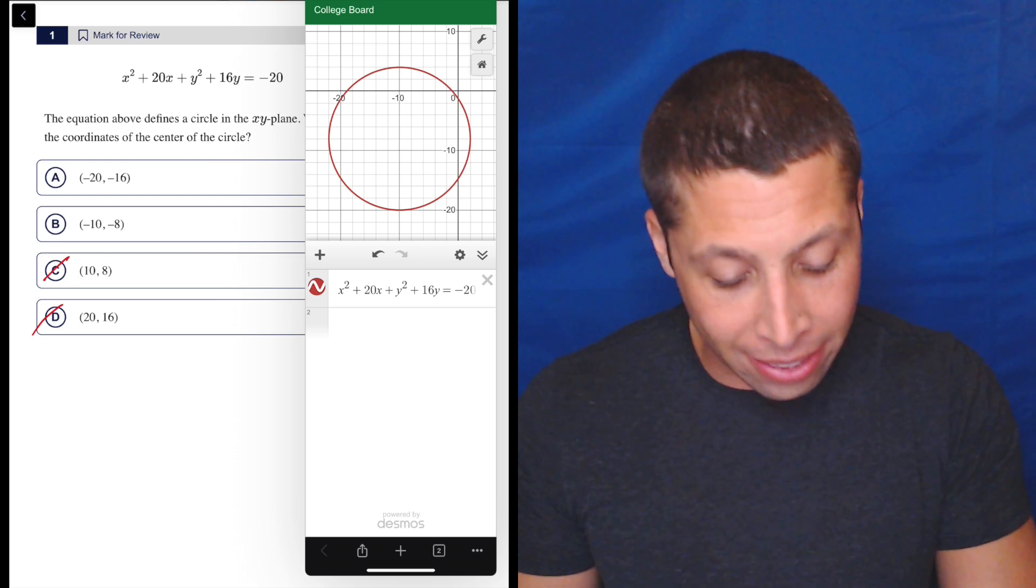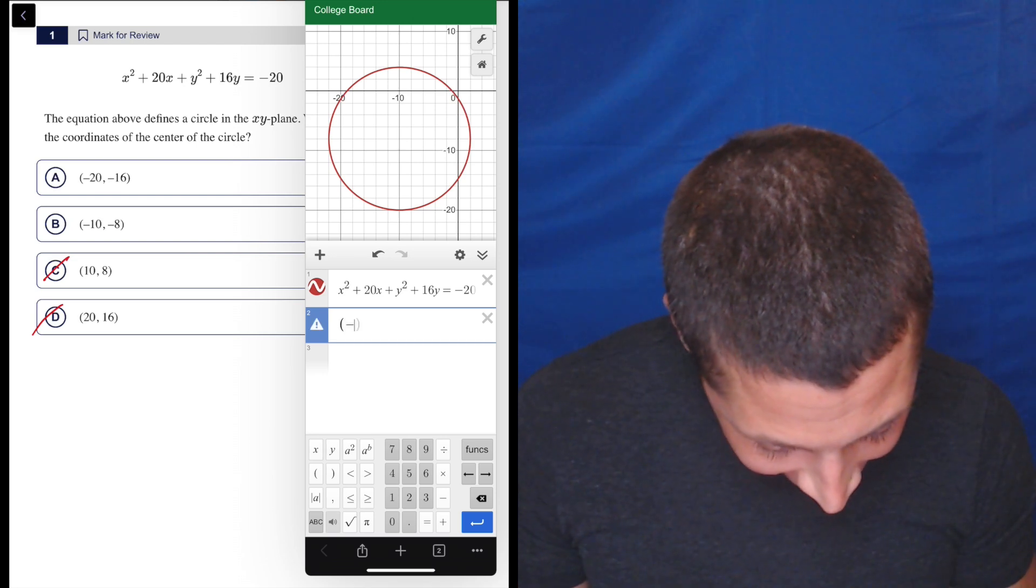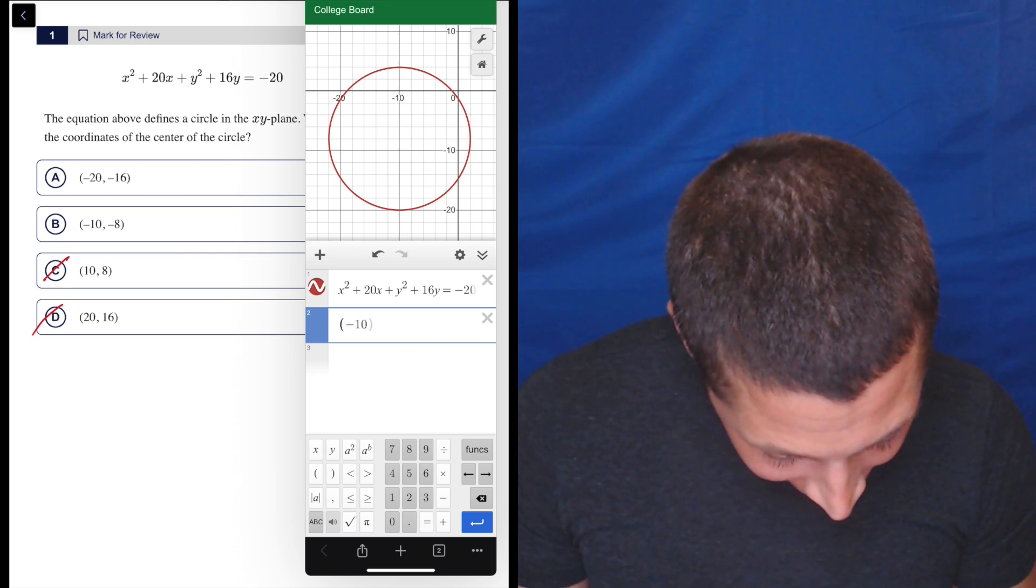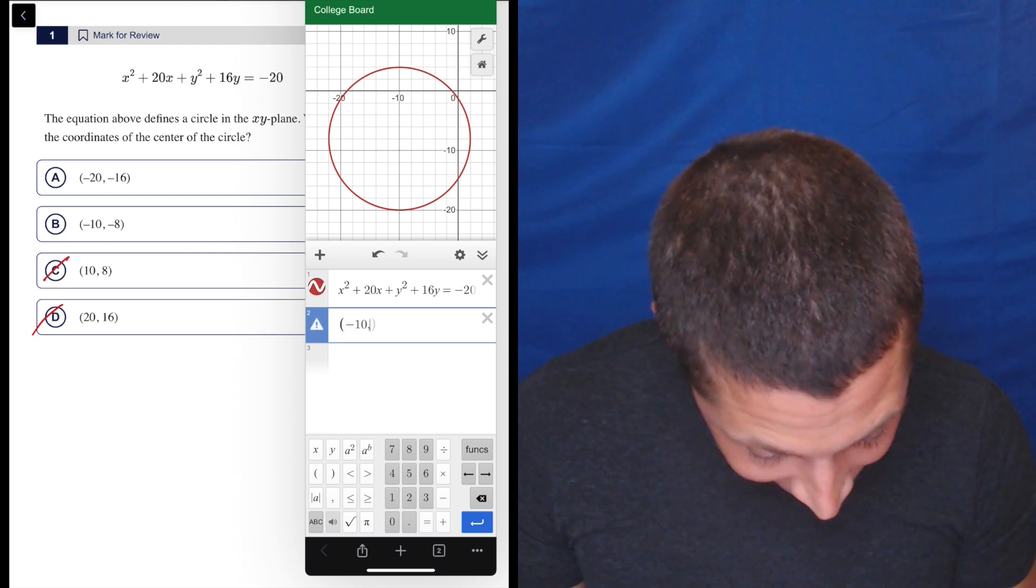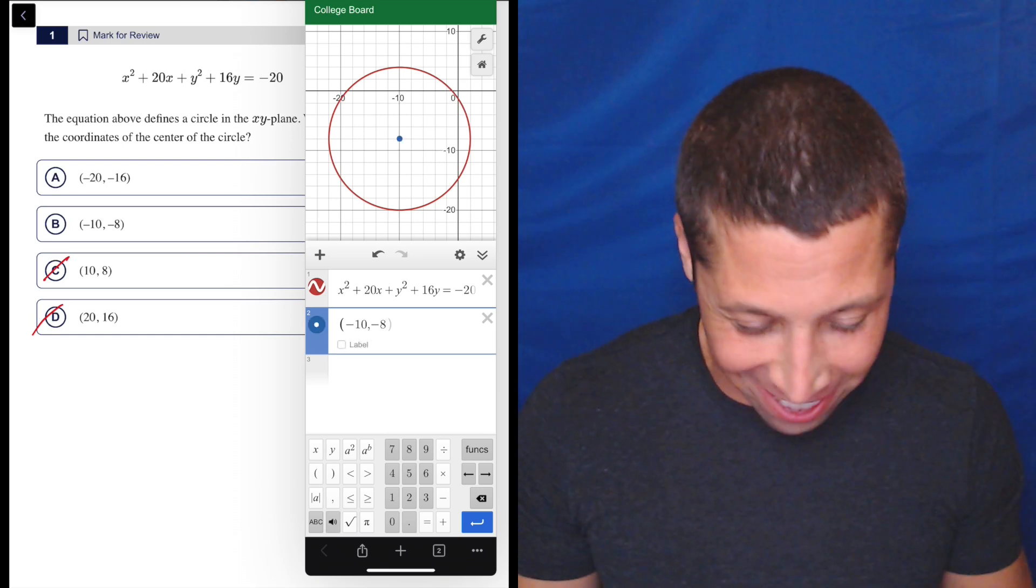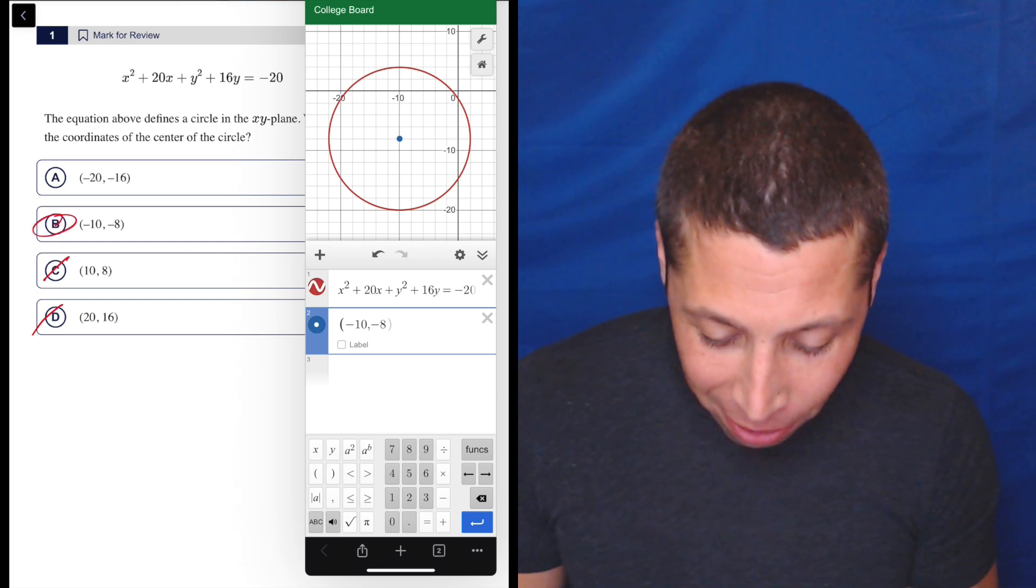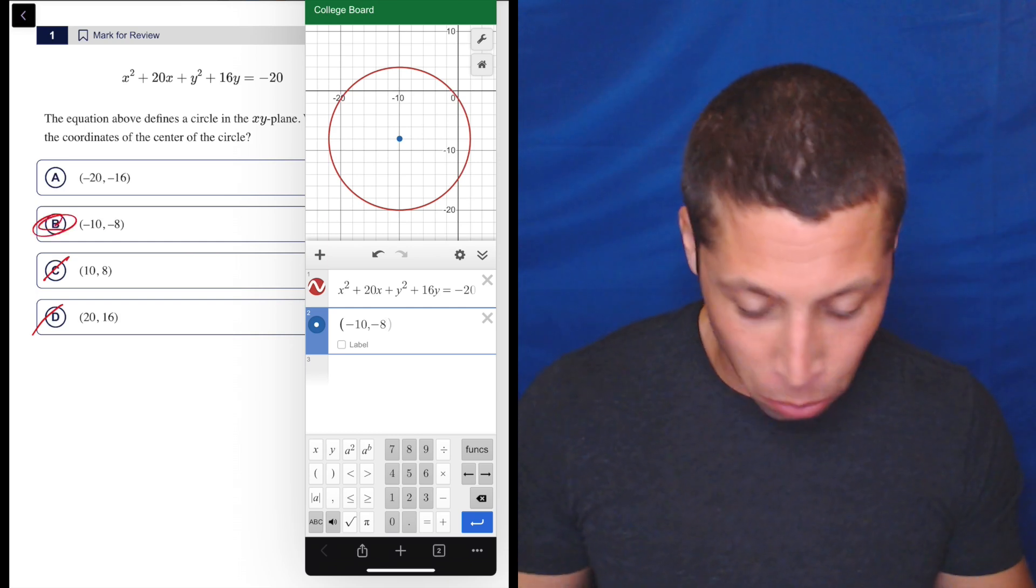There's no way for me to kind of see the center of the circle. I guess I can actually do this now that I think about it. Negative 10, negative 8. And yeah, there you go. It's much clearer now that that's the right answer. You could always type in a point. So there you go. That's the center. Nothing more to it than that.